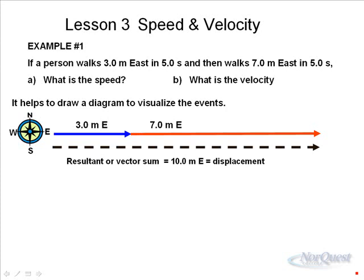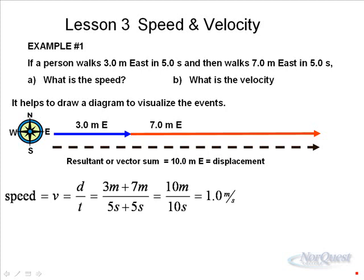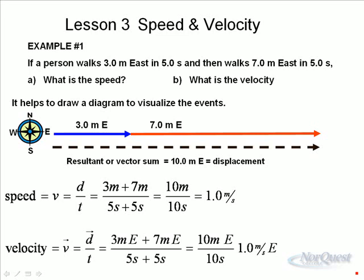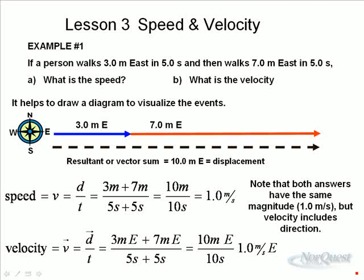So the total distance is ten meters. Also though, the total displacement is ten meters. But you also have to say with displacement what the direction is. And of course, it's to the east. So when we calculate the speed, speed equals d over t. Distance over time is three plus seven meters over five plus five seconds. Ten meters in ten seconds, one meter per second. Velocity, however, is three meters east plus seven meters east gives me a total of ten meters east in ten seconds, one point zero meters per second east. Notice that they both have the same magnitude, but velocity must also include the direction.